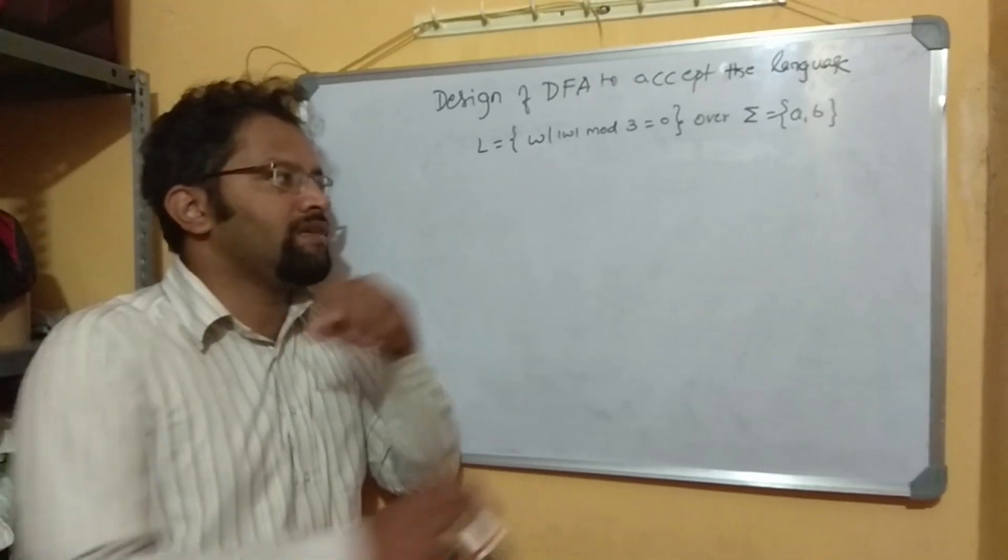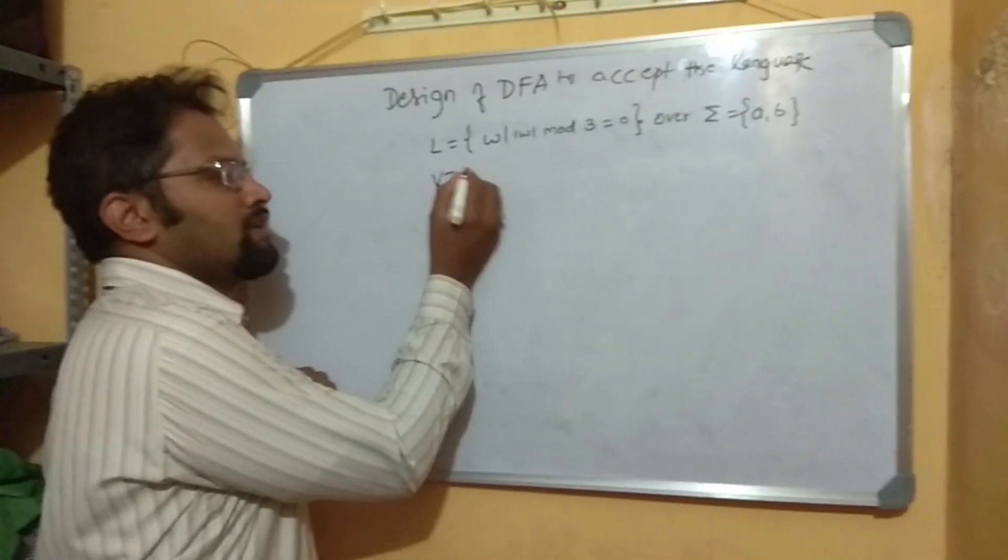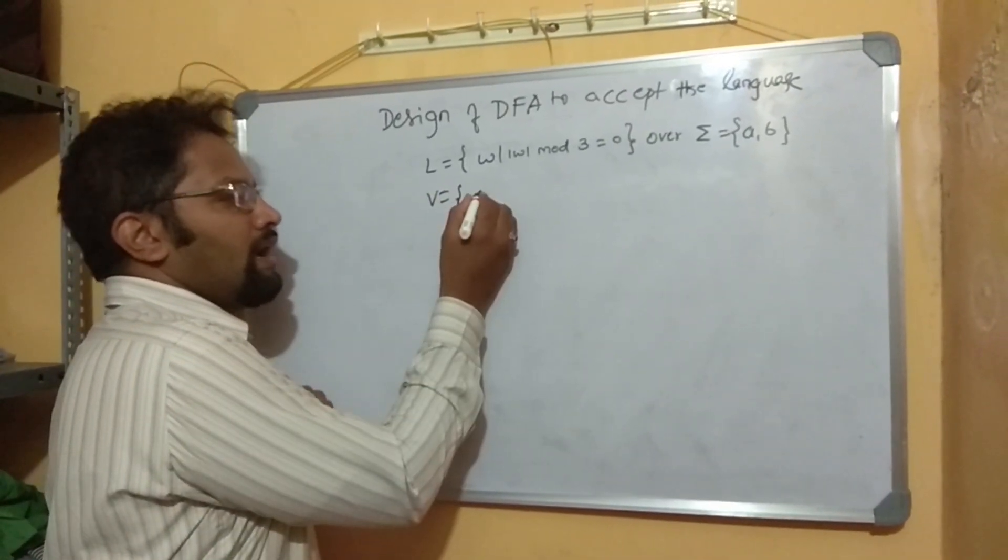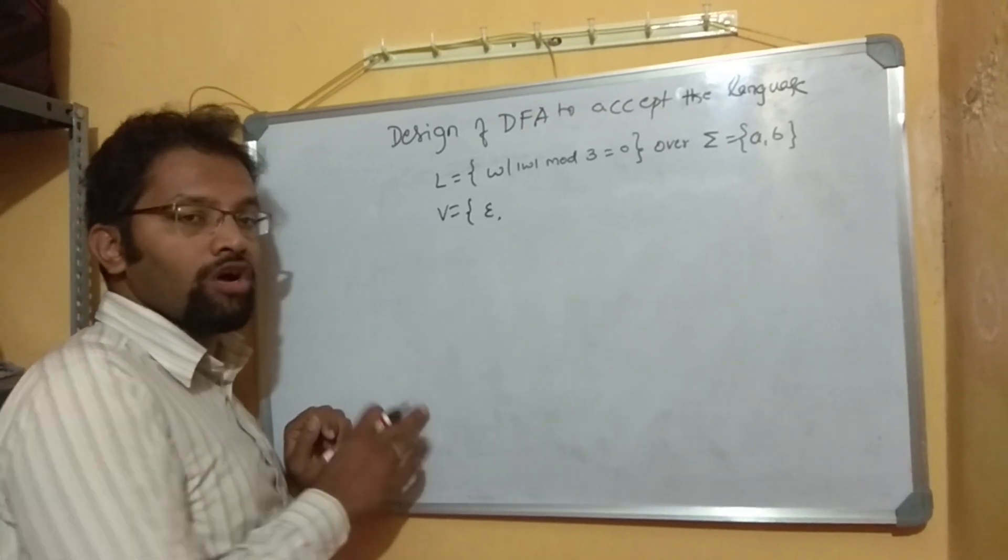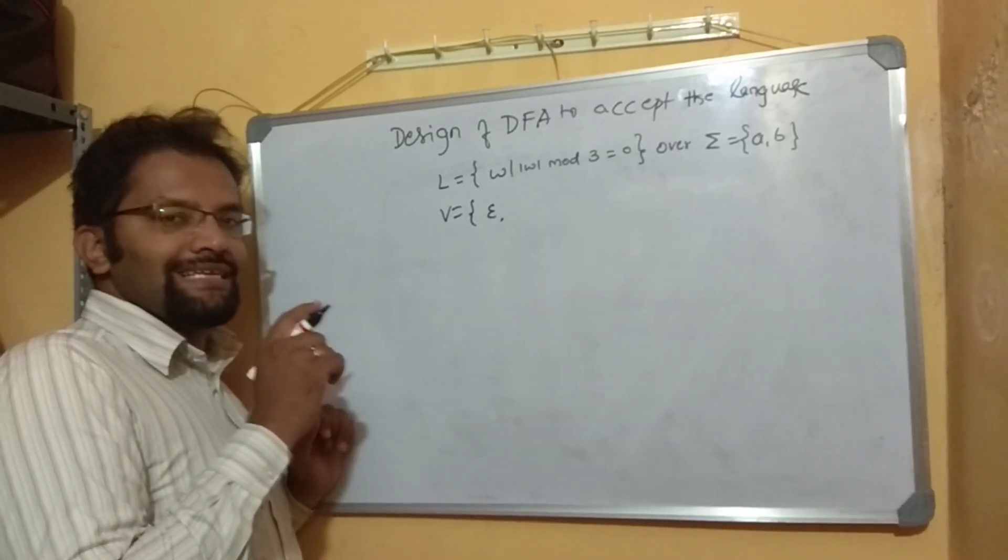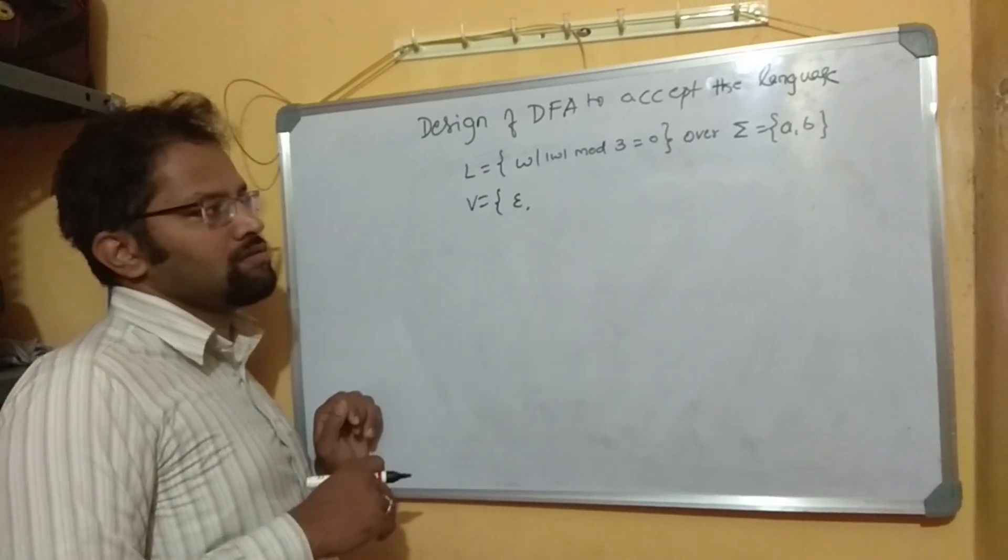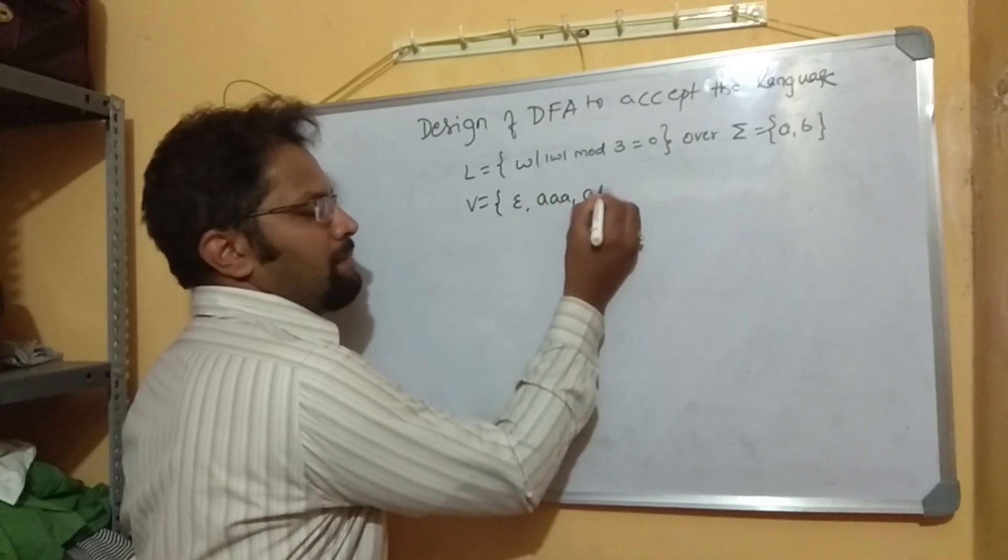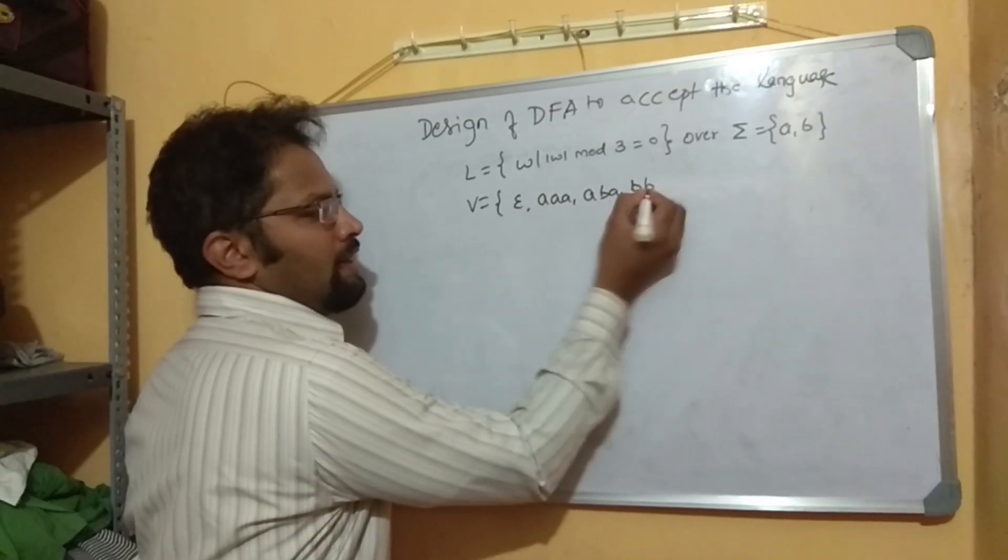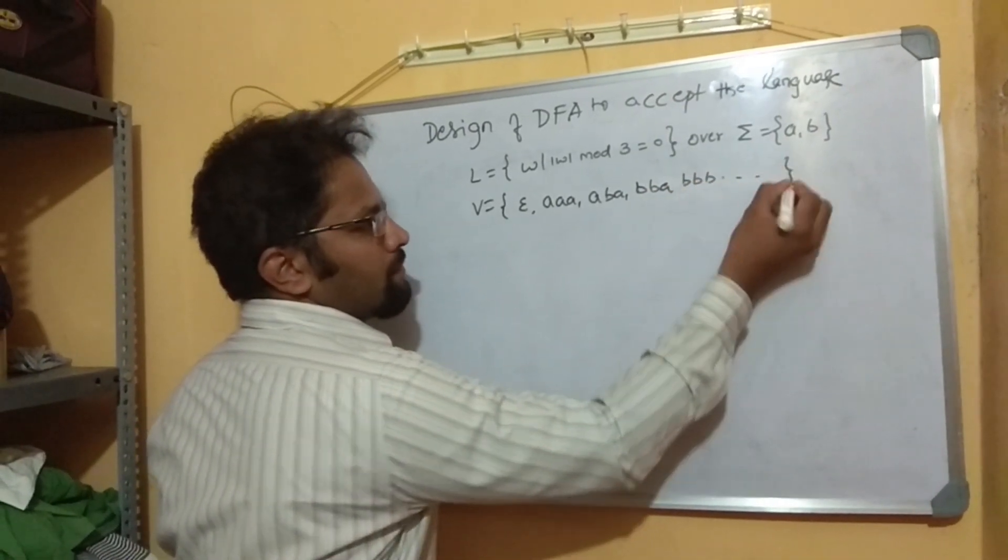Now, let me first write the set of valid strings as we say the first step. In this, I can say epsilon is a minimum string. Why? Because epsilon indicates 0 number of symbols. 0 mod 3 is 0 only. Next, it could be AAA, ABA, BBA, BBB and it goes on.